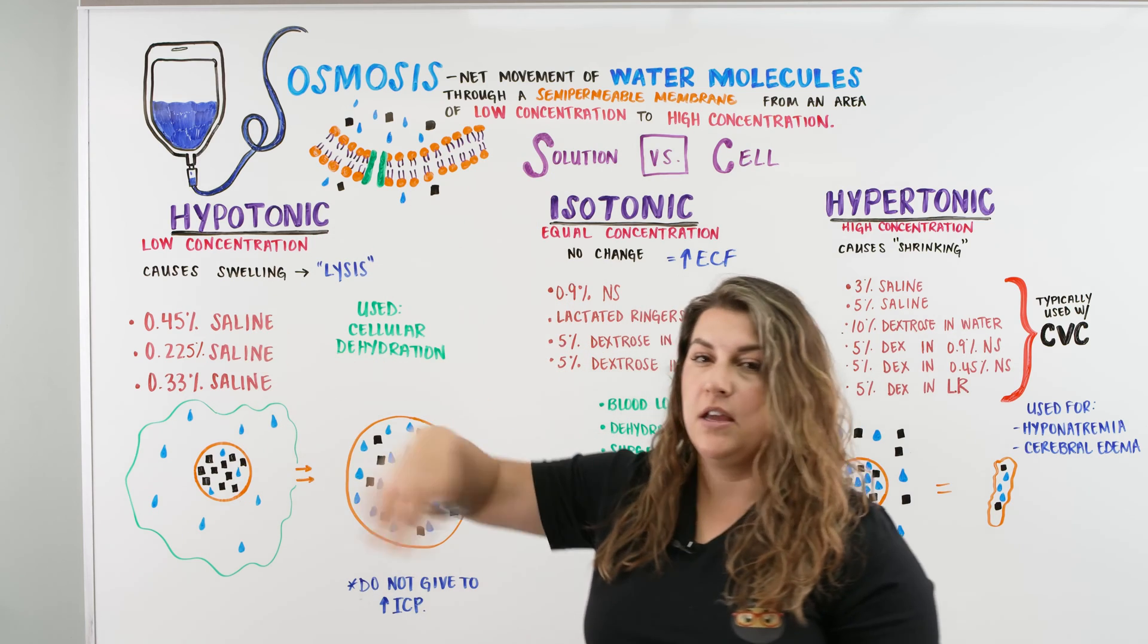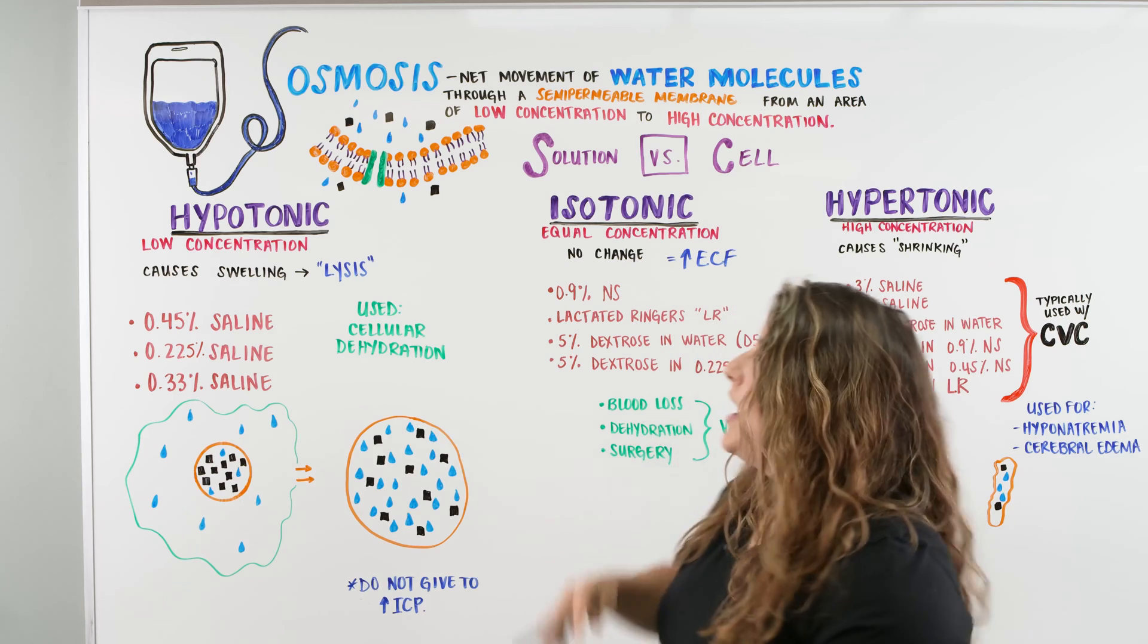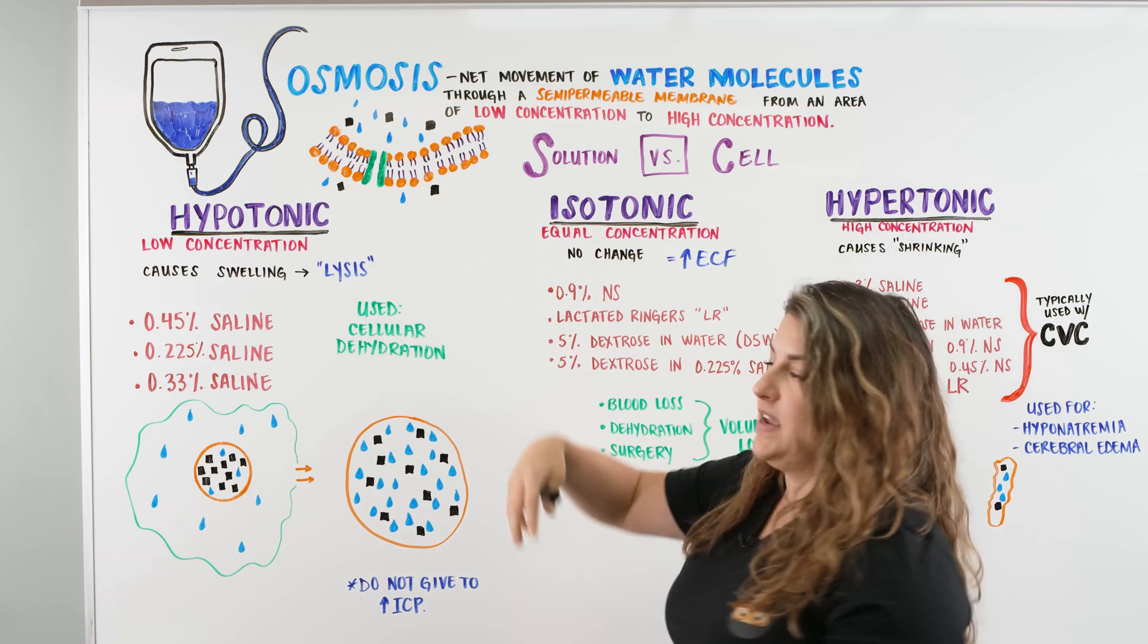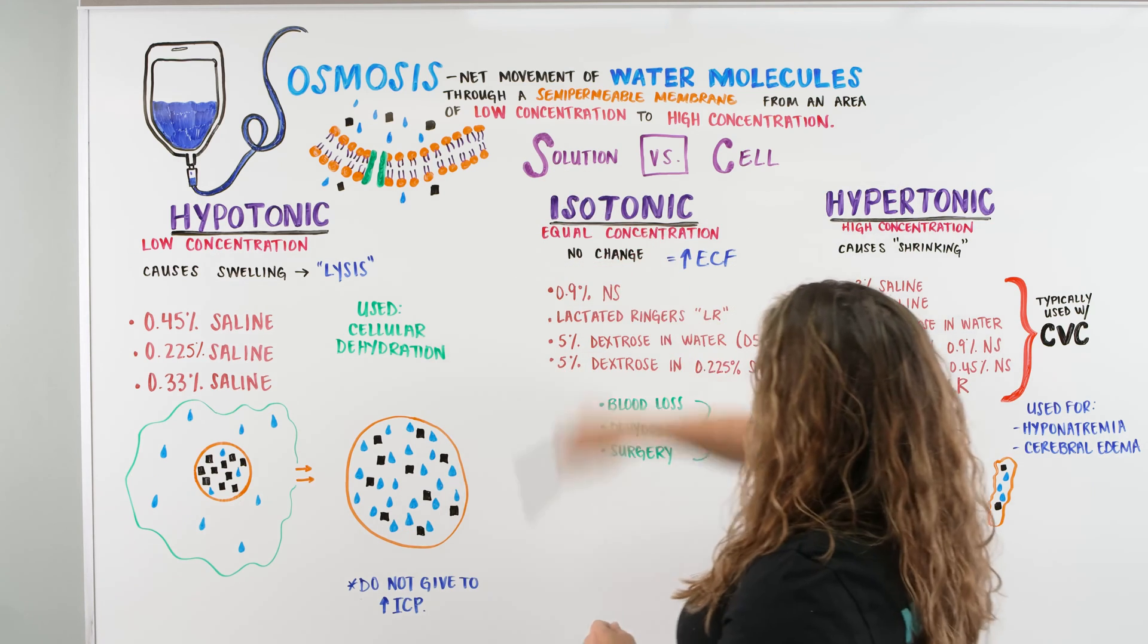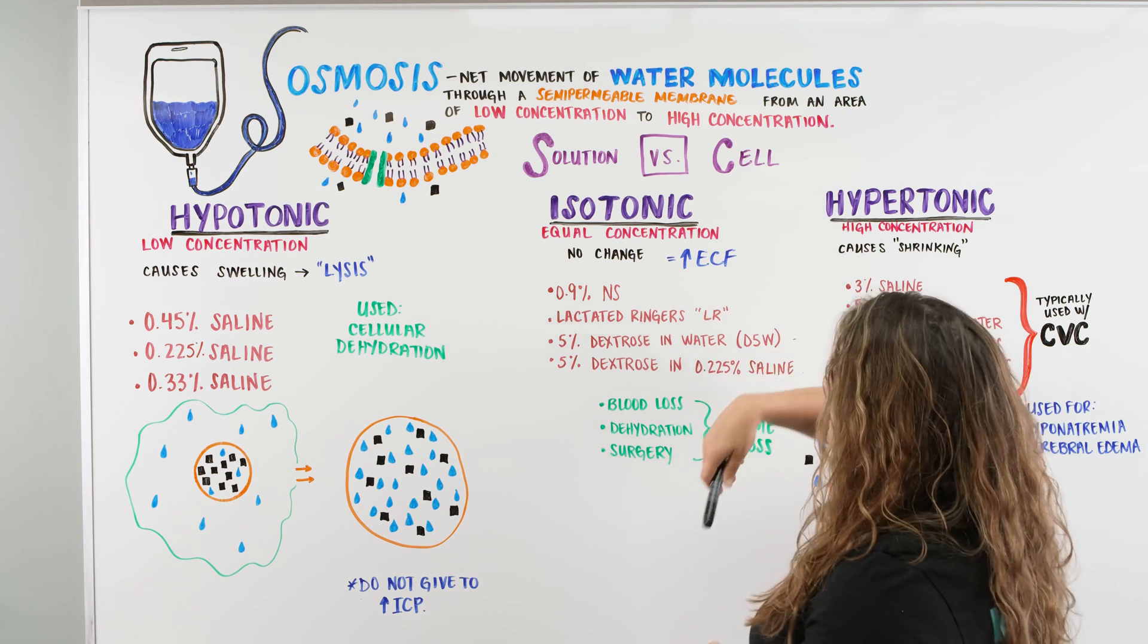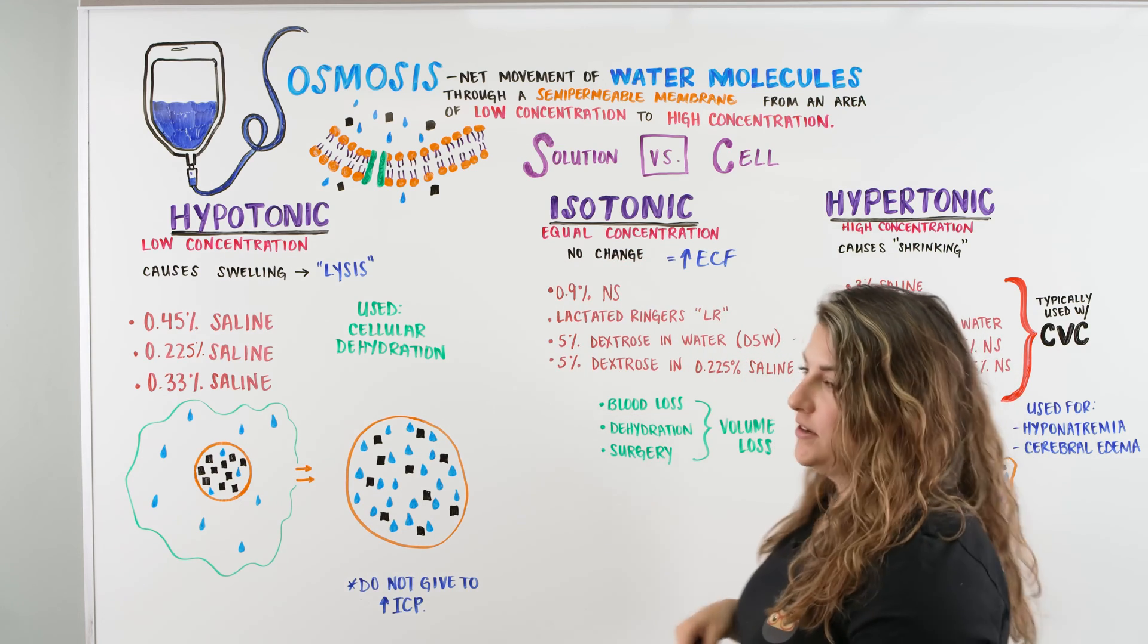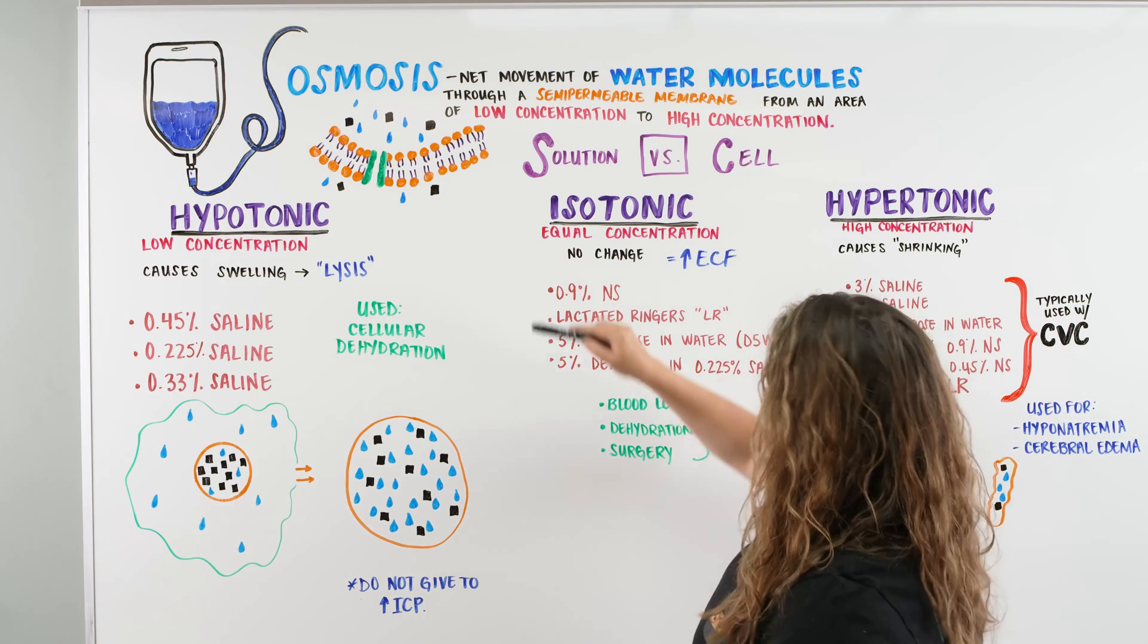We're going to be giving them an IV intravenously or through whatever other type of access point that they have. When we do that, we are going to be talking about how that fluid goes into the vein, into the body, and then into our cell. That process is called osmosis. And we want to understand that osmosis is the movement of water molecules through a semi-permeable membrane from a low to high concentration. And you're probably like, whoa, this is a lot of information already. Too fast. Let's slow it down. Think about it again.